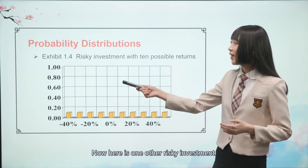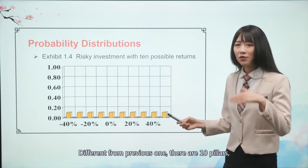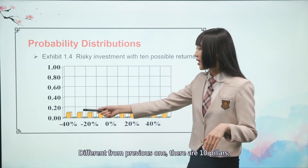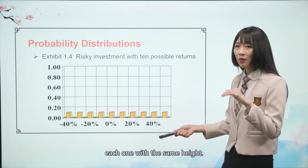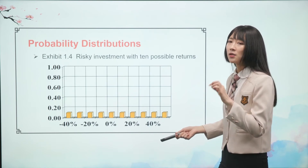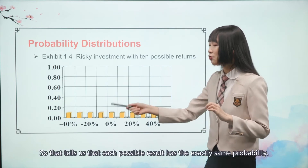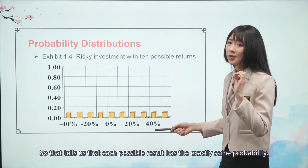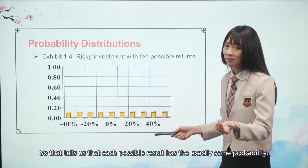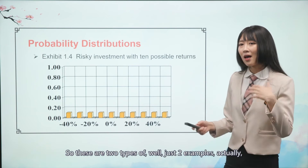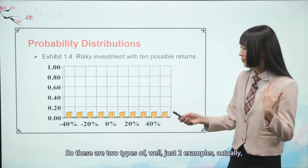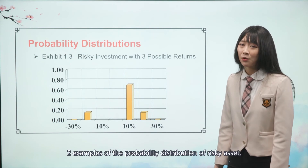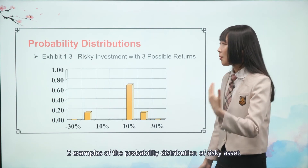Here is another risky investment. Different from the previous one, there are 10 pillars, each with the same height. That tells us each possible result has exactly the same probability. These are two examples of probability distributions.